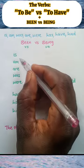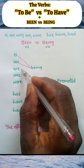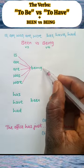And it goes like this: is being, am being, are being, was being, were being, promoted.